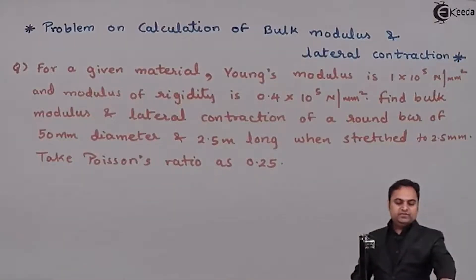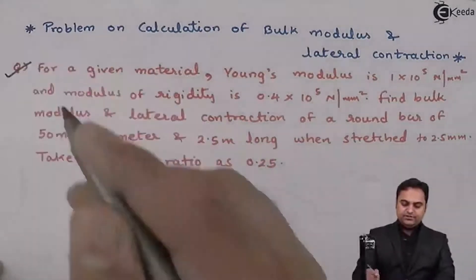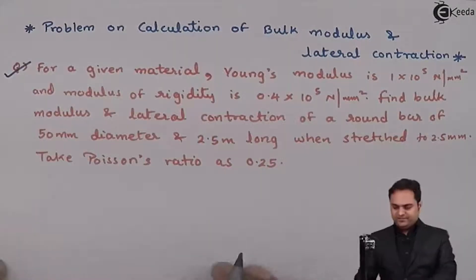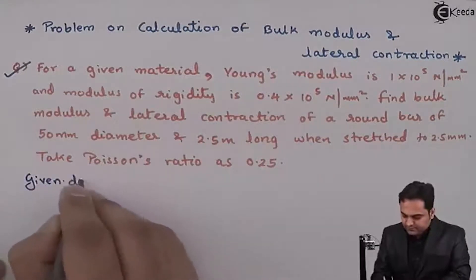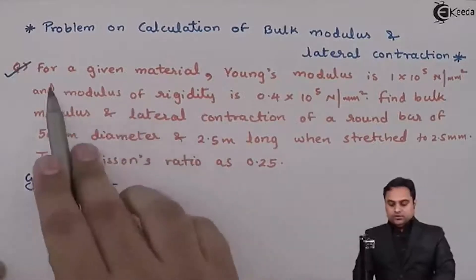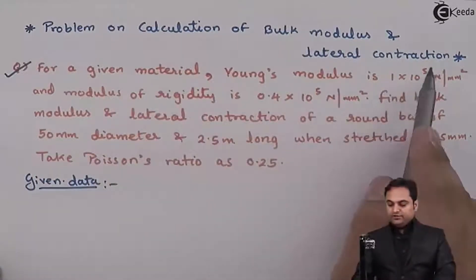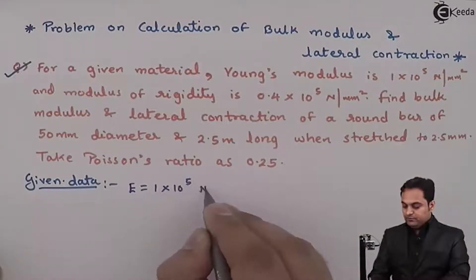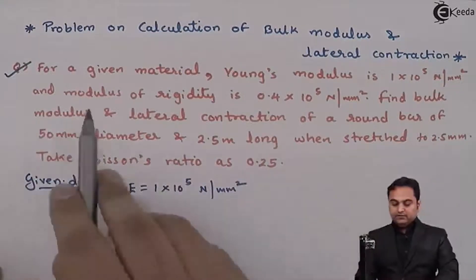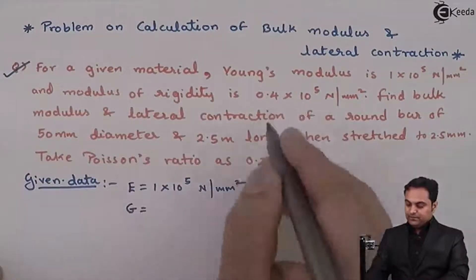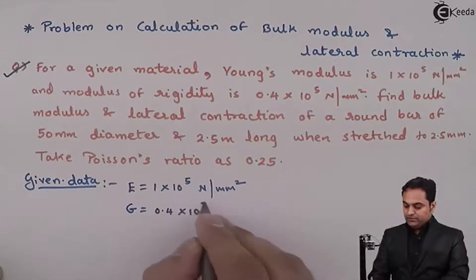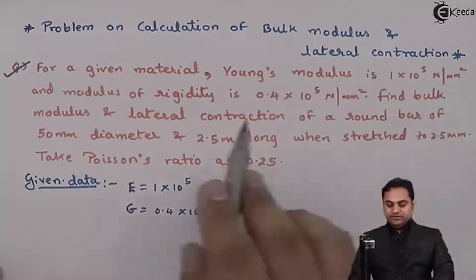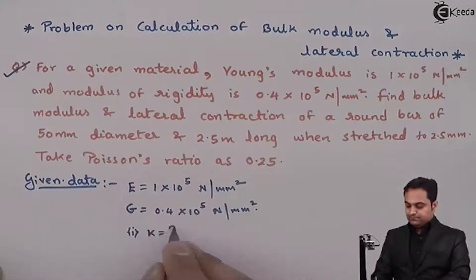Hello friends, in this video we will see a problem on calculation of bulk modulus and lateral contraction. For a given material, Young's modulus E is 1×10⁵ N/mm² and modulus of rigidity G is 0.4×10⁵ N/mm². We need to find: first, the bulk modulus, and second, the lateral contraction.